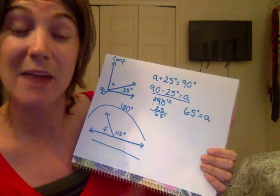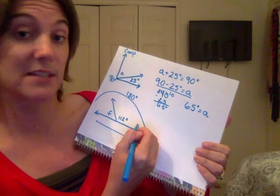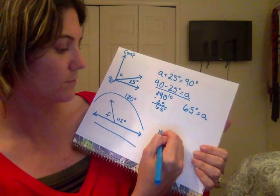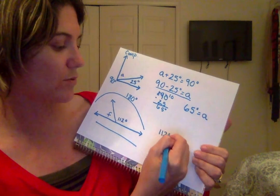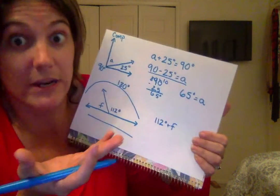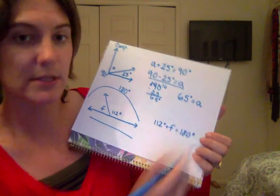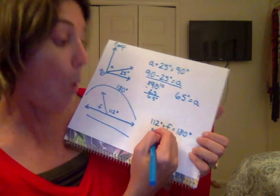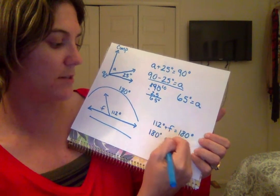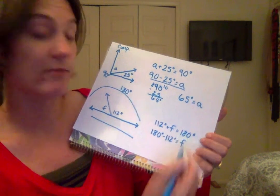So once again I'm going to go ahead and write my number sentence. I do know this angle. I don't know angle F. 112 degrees plus F, which we don't know, equals 180 degrees. Or we can write 180 degrees minus 112 degrees equals F.